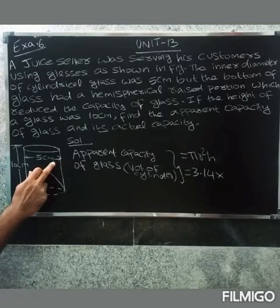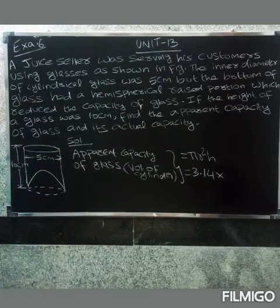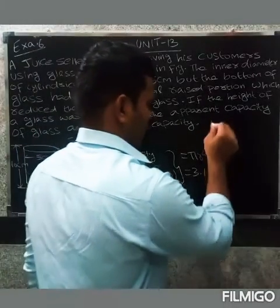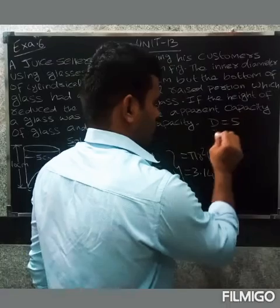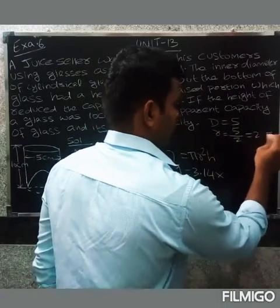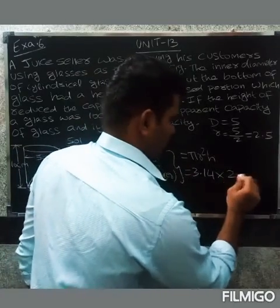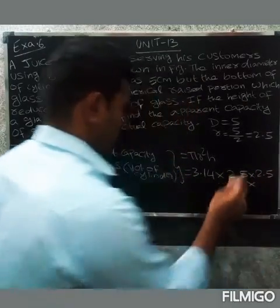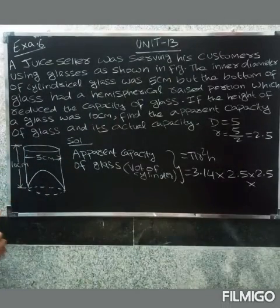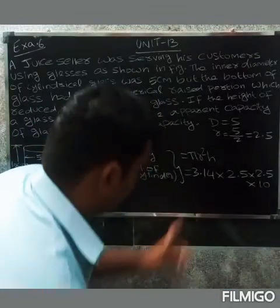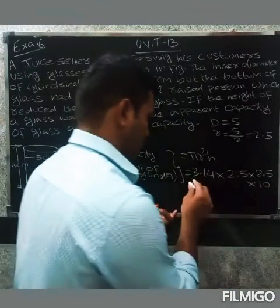The diameter is 5 centimeters, so radius equals 5 divided by 2, which equals 2.5 centimeters. So we have 2.5 × 2.5 × height of cylinder. The total height of the cylinder is 10 centimeters.